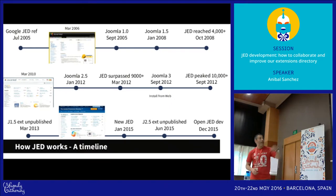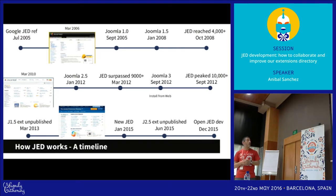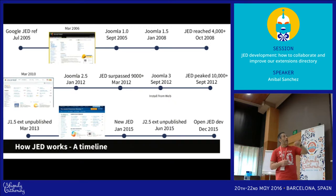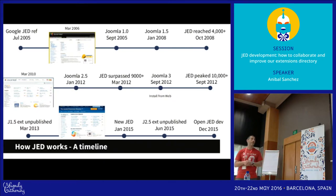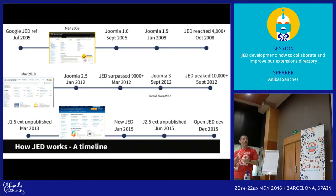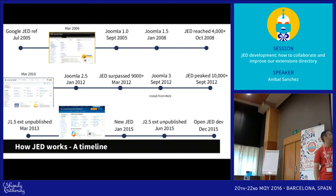Looking into the evolution of JET: JET has been with us since 2005 — we can find Google references about JET even before Joomla 1. We can also verify how the design has evolved over time. In 2012, JET had more than 10,000 extensions, which was a huge challenge because at that time we had three stable Joomla versions simultaneously — 1.5, 2.5, and Joomla 3. After that we began to deprecate Joomla 1 and Joomla 2, and ended with a reduced number of extensions.